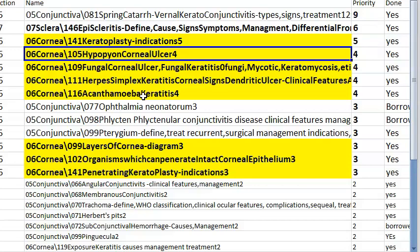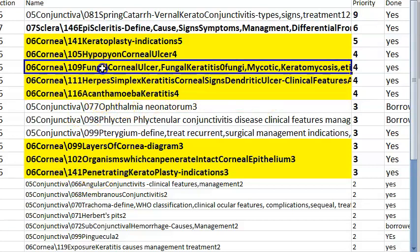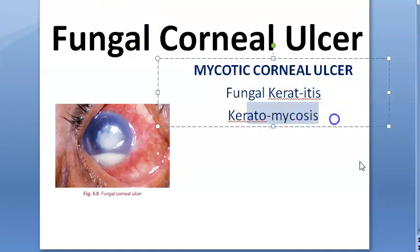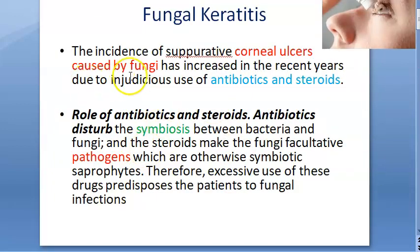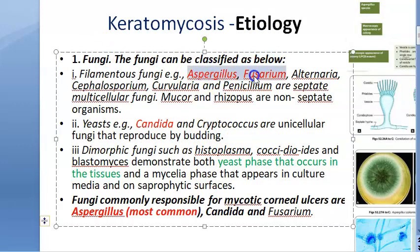Fungal corneal ulcer (mycotic keratitis) occurs especially with antibiotic and steroid overuse, disrupting the balance between bacteria and fungi. Key organisms: Aspergillus (most common), Fusarium, and Candida. Diagnosis: KOH mount, lactose cotton phenol blue staining, PCR.